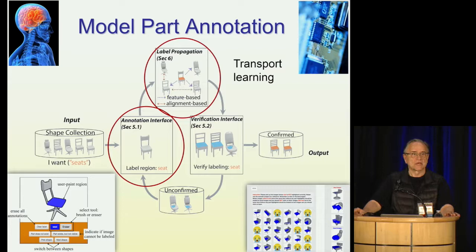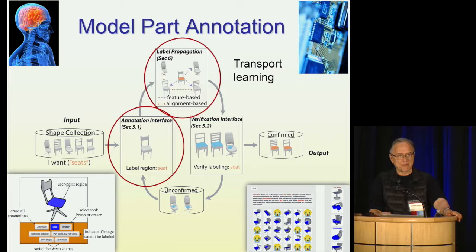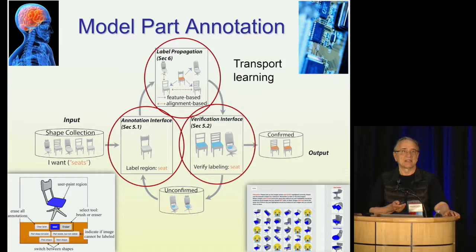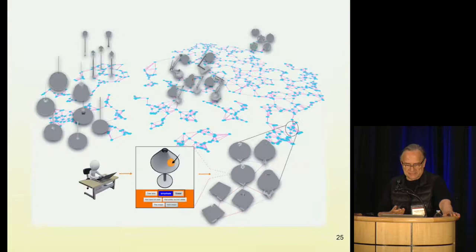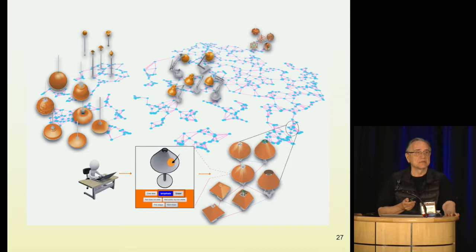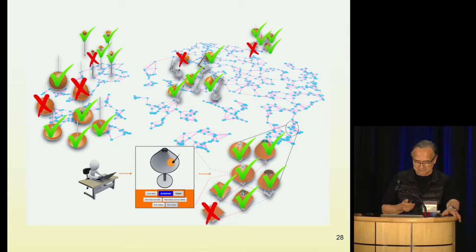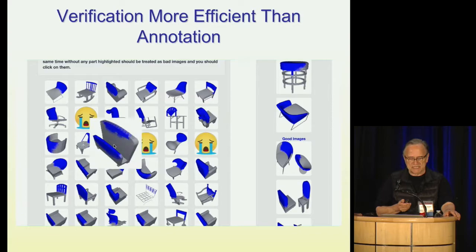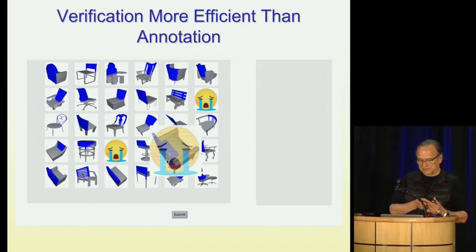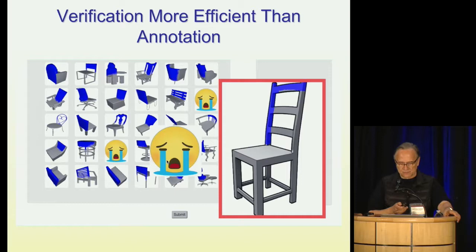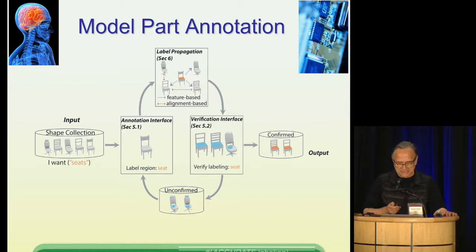All propagated annotations get verified by humans, so everything is human-verified before it goes into the repository. There's a human annotating where the shade is on a lamp, and this information is propagated to similar objects in the network, then everything is verified or rejected by humans. The key aspect is that verification is a much, much faster step than annotation. Annotation means painting on a 3D model, which is quite slow. But verification is just clicking on wrong images — so it works very fast and vastly reduces the amount of time needed to annotate.